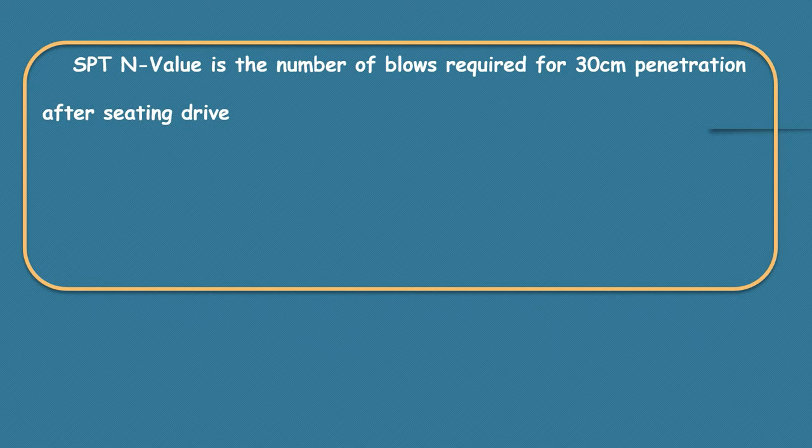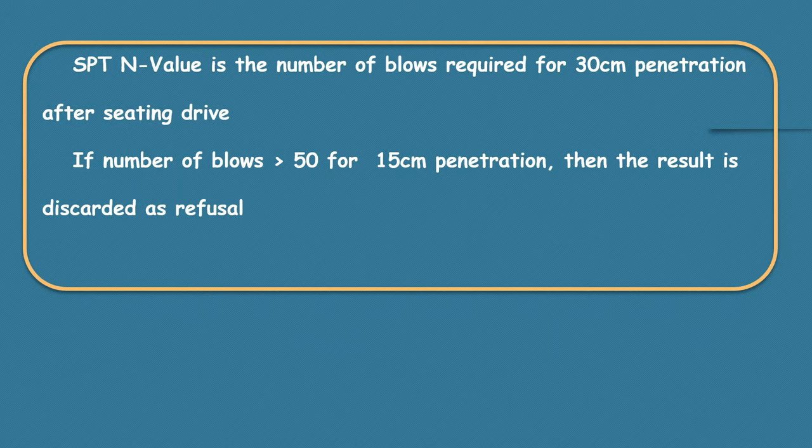If number of blows are greater than 50 for a 15 cm penetration, then it is taken as ground refusal for your penetration. So don't consider that value.